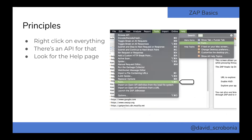The final principle: look for the help page. Documentation isn't as strong as in Burp, so you might get frustrated looking for it. But in ZAP 2.8, if you go to the help menu and search, it's really cool — it'll automatically start opening up the menu to show you where things are inside. And the ZAP community is really strong because it's so global, so there's always going to be someone there to help with your problem.